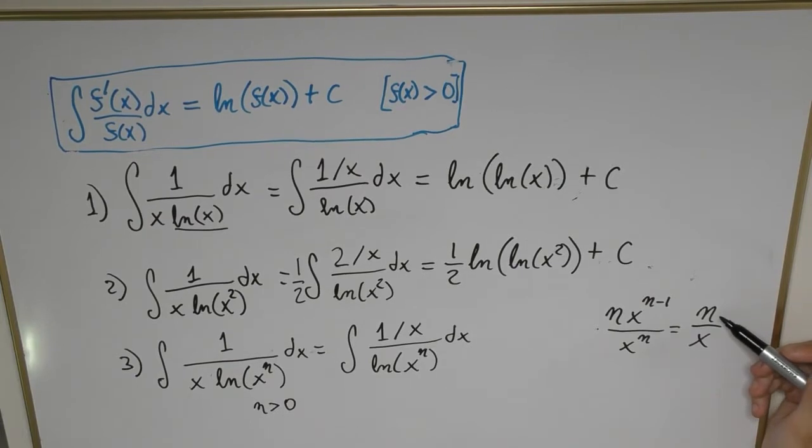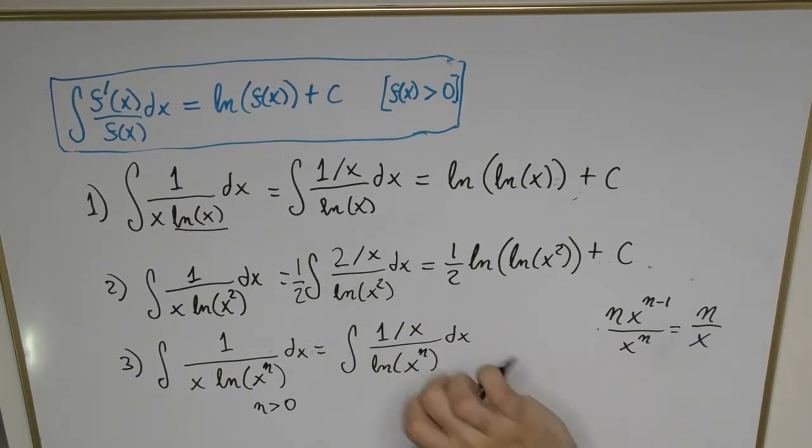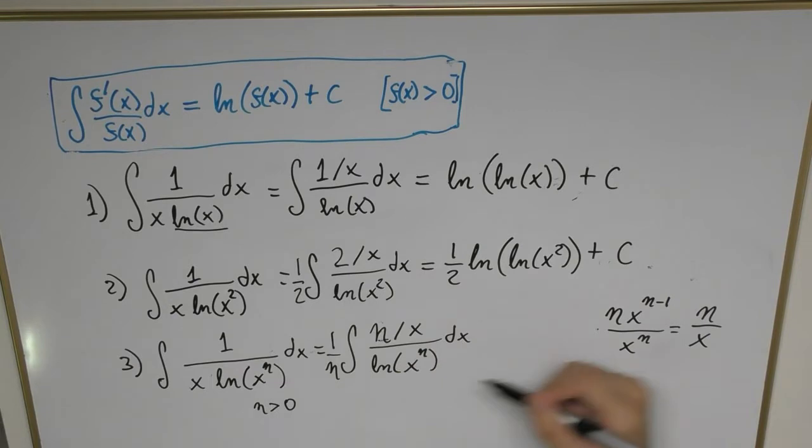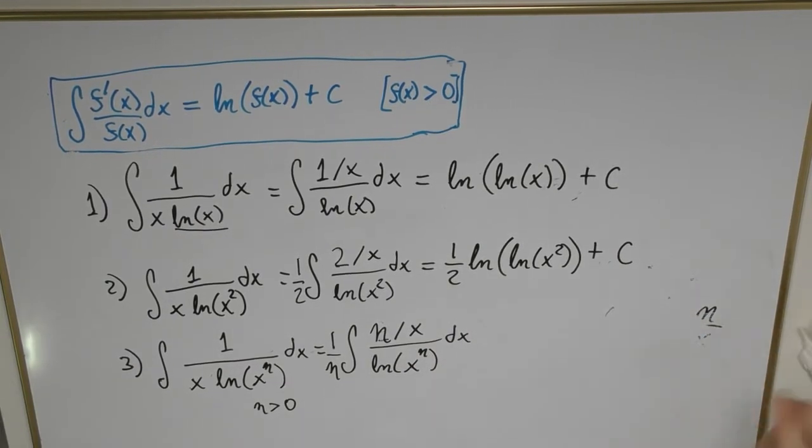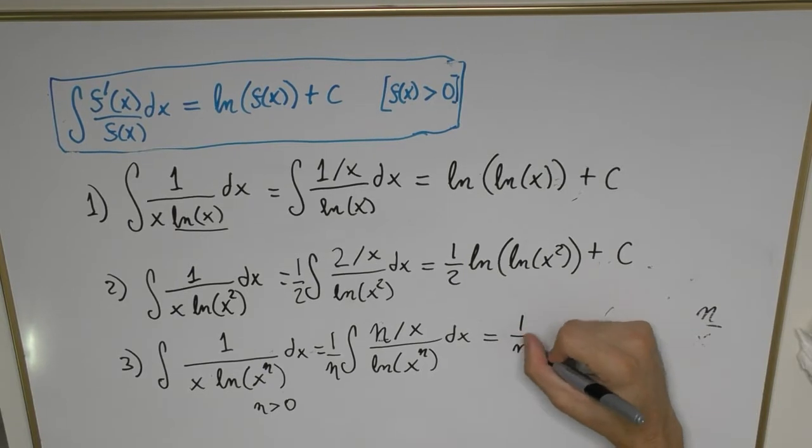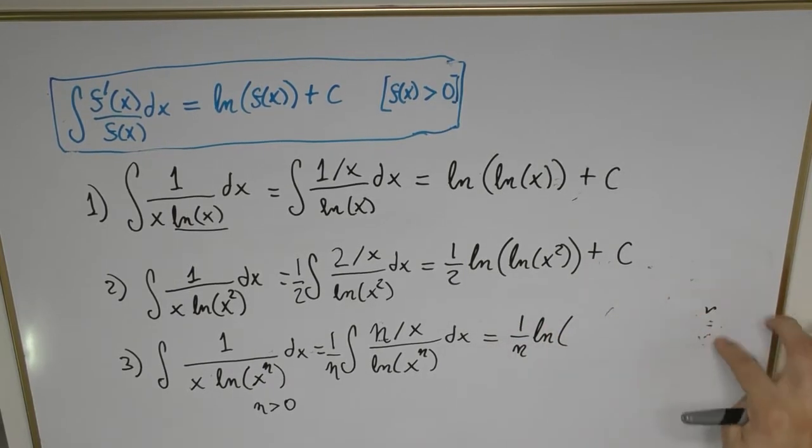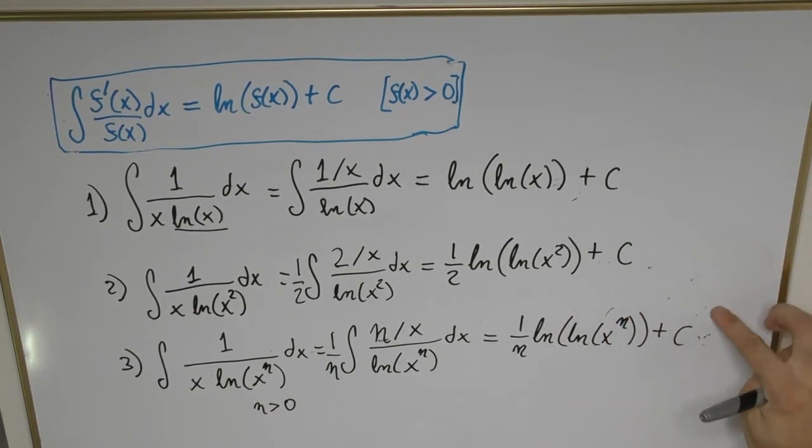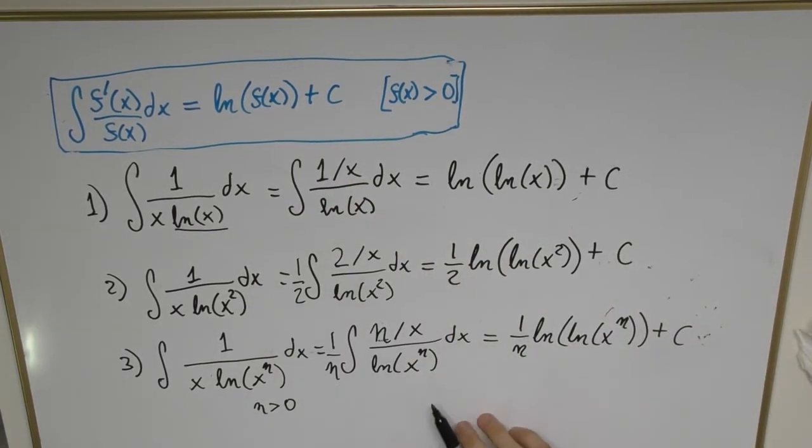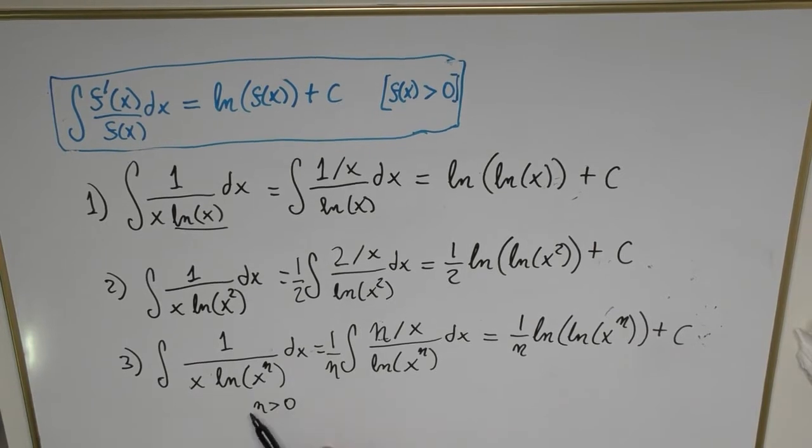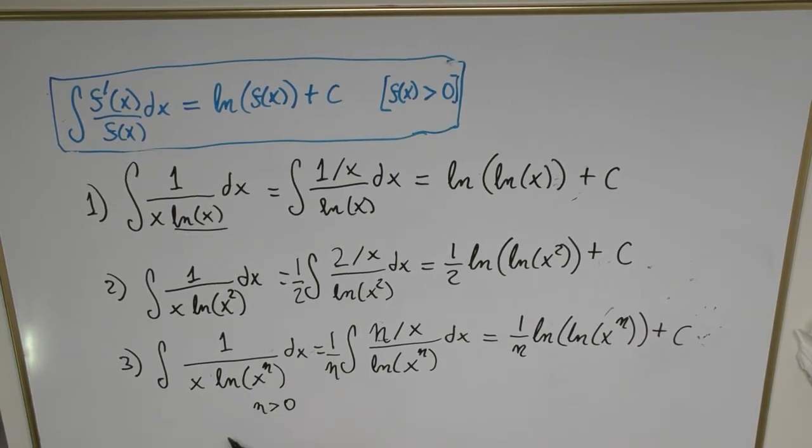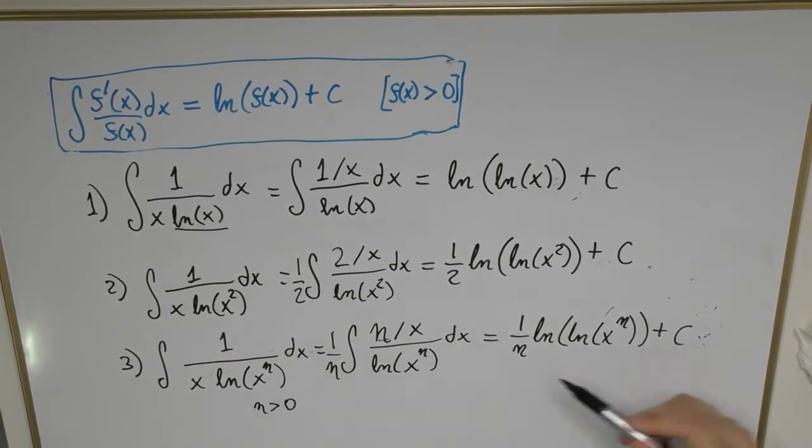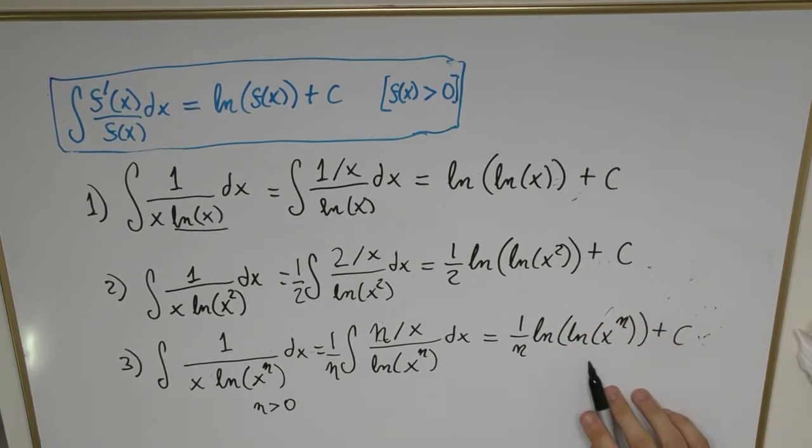So we're going to place an n here at the numerator and divide the whole thing by n. Now we can find what this integral is, and that's going to be (1/n)·ln(ln(x^n)) + C. So simply by following this train of thought, we were able to find a general expression for any type of function that contains ln(x^n) in the denominator, so long as there is an x multiplying that function.